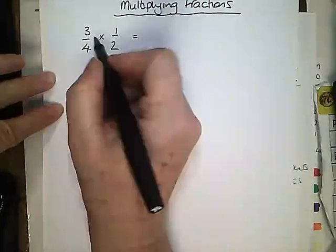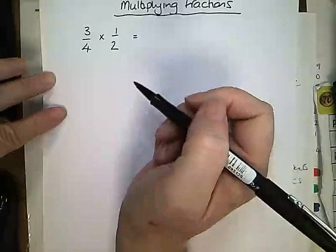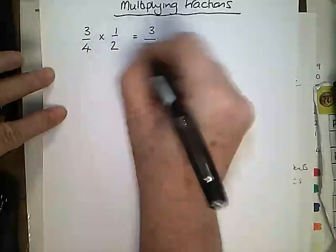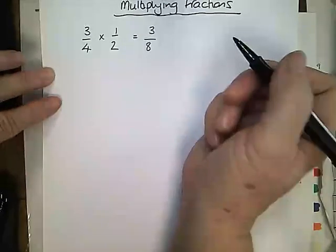We simply times the tops together, times the bottoms together and it will give us our answer. So 3 times 1 is 3 and 4 times 2 is 8. And that is the easiest thing that we will ever ask you to do with fractions.